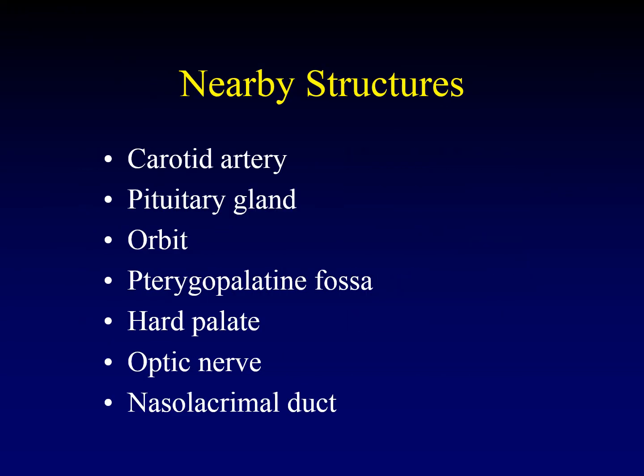Let's talk about nearby structures that can affect or be affected by the paranasal sinuses. The carotid artery runs alongside the sphenoid sinuses. The pituitary gland sits on top of the sphenoid sinuses. The orbits are lateral to the ethmoid air cells. The pterygopalatine fossa — we're going to talk a lot about that. The hard palate is the floor of the nasal cavity. The nasolacrimal duct runs along the lateral aspect, dumping into the inferior meatus. And the optic nerve is also near the sphenoid sinuses.